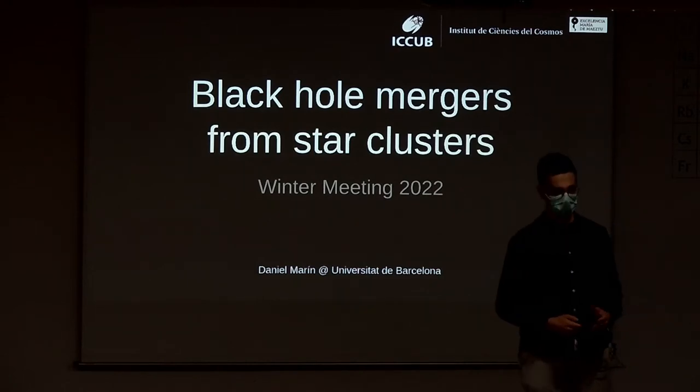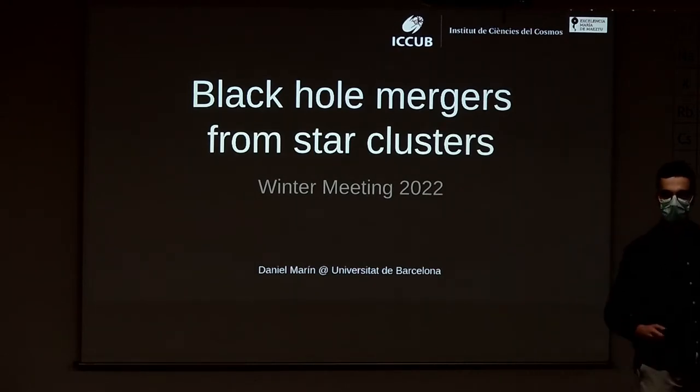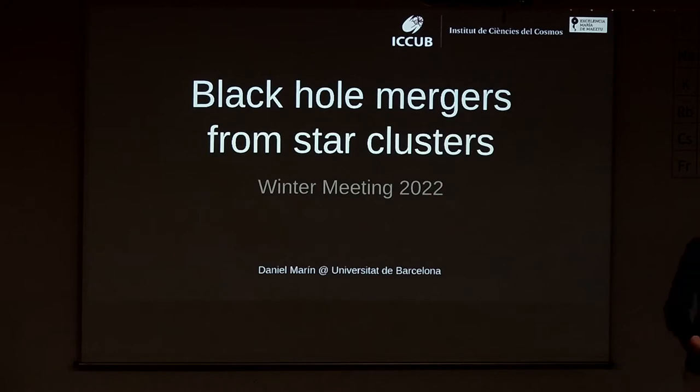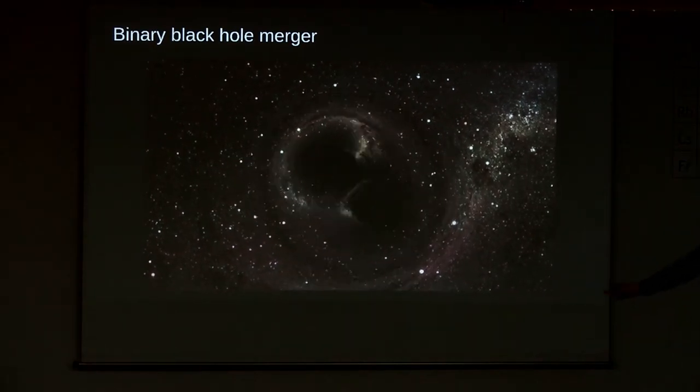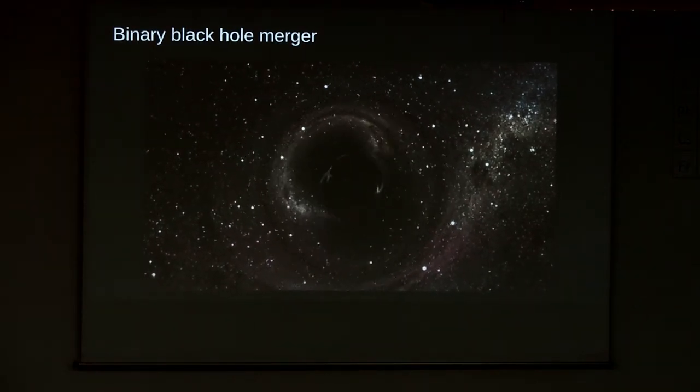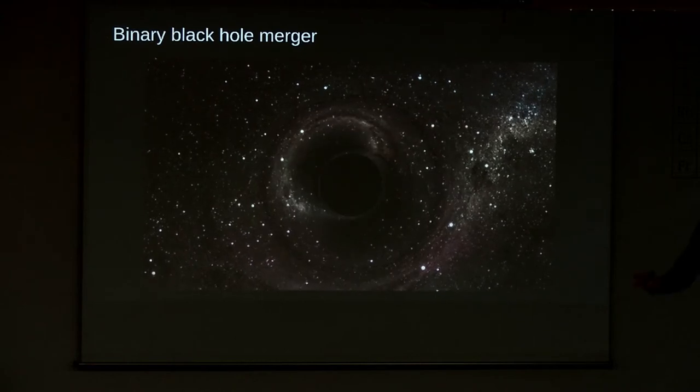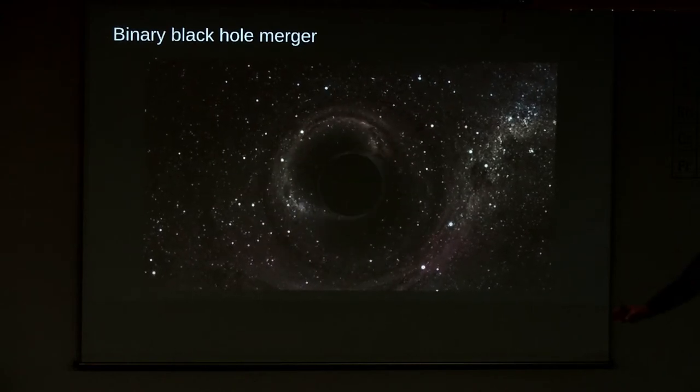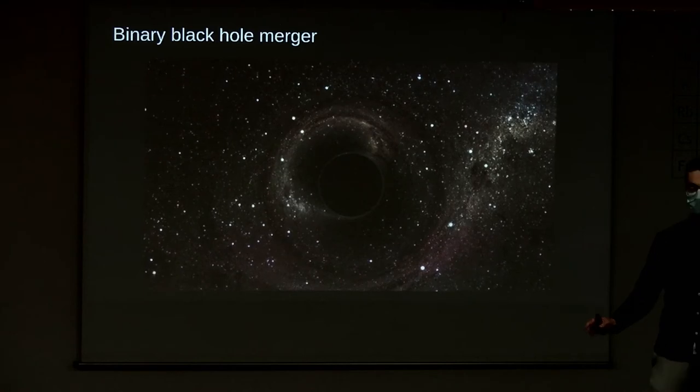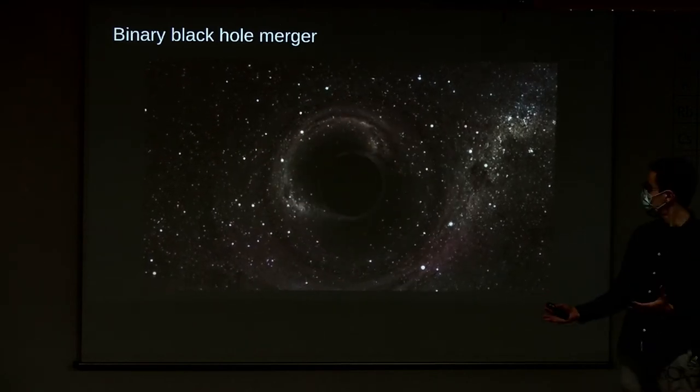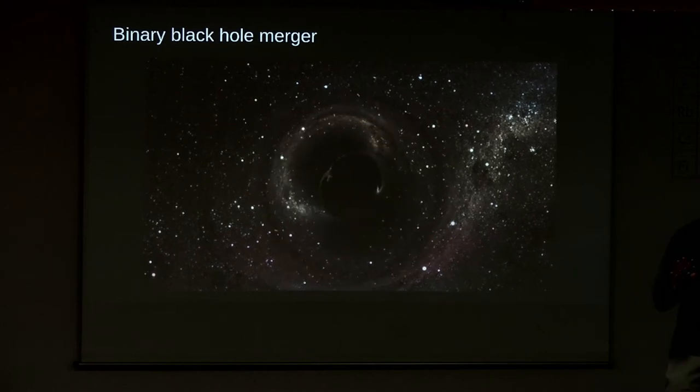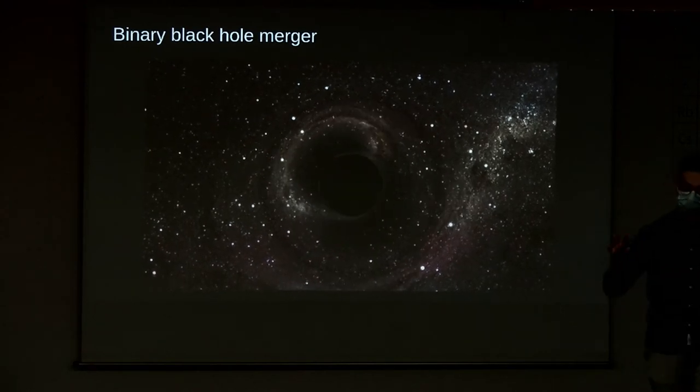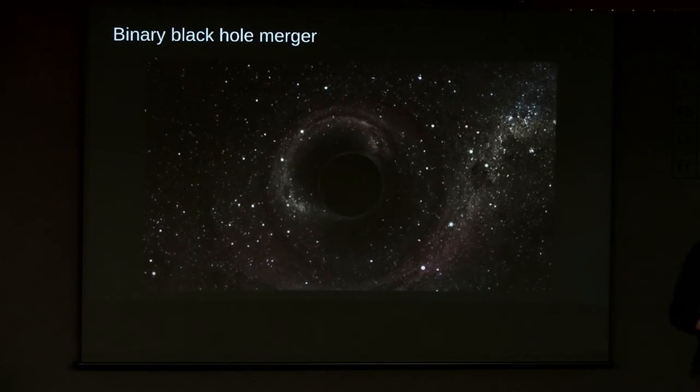Hi, I'm Danny Marin. Let me start by showing you a quick video. What do we see here? We see a binary black hole merger. This is a process where two black holes come into very close contact and merge, converting two black holes into a single more massive black hole.